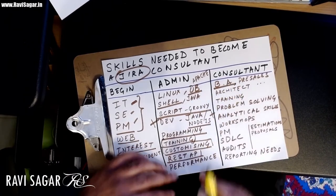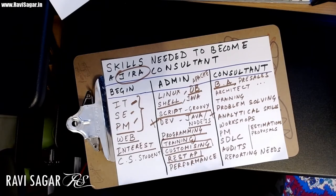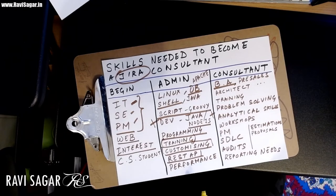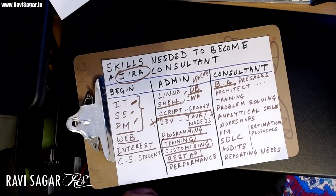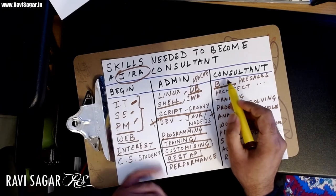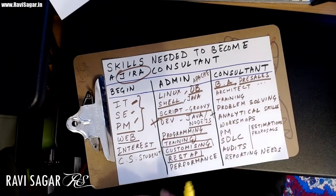When it comes to consultation, consultants are more like business analysts. For example, if a company approaches me to set up Jira or other Atlassian tools, I won't just install Jira and hand it over after two days of customization. Business analysis and requirement gathering are really important — you need to understand what they are trying to do with the tool, what problems they have, and how Jira can help them. Business analysis is a very important aspect of being a consultant.